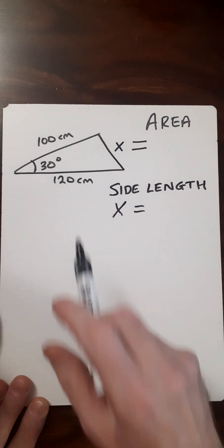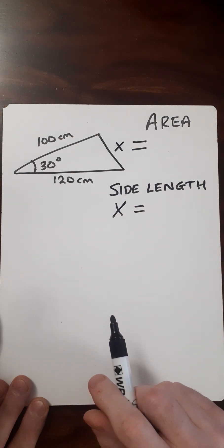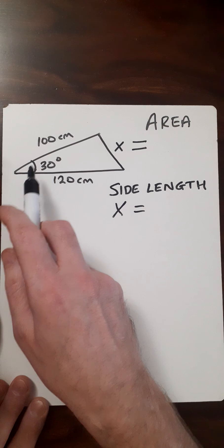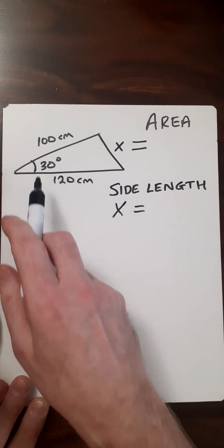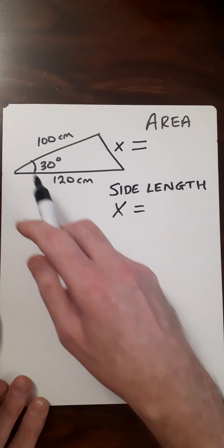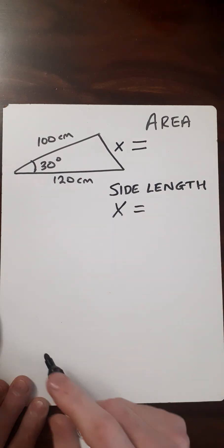In this video, we're going to find the side length X with something a little different from the cosine rule. We've got this triangle with sides 100 cm and 120 cm and a 30 degree angle. We're going to use the area of this triangle to help us find this side length.